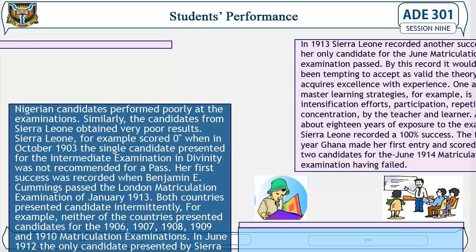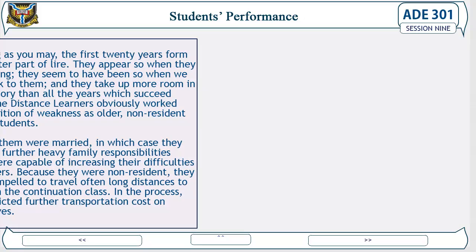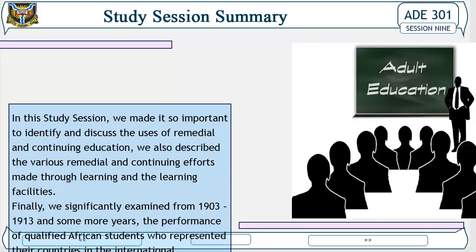The following year, Ghana made her first entry and scored zero percent, having two candidates for the June 1914 matriculation examination. The distance learners obviously worked from a position of weakness as older, non-resident private students. Many of them were married, and thus assumed further family responsibilities which increased their difficulties as learners. Because they were non-resident, they were compelled to travel long distances to and from the continuation class, inflicting further transportation costs on themselves.